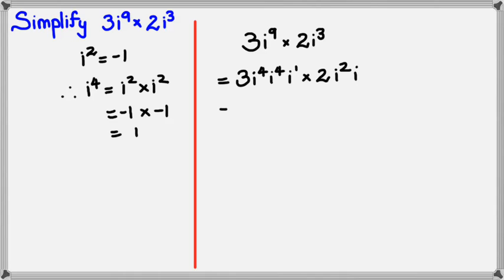I do know that i to the power of 4 is equal to 1, so I could replace all the i to the power of 4s as 1. There's 1, there's another 1, and this is multiplied by i. I also know that i squared is equal to negative 1, and of course the i stays as it is.